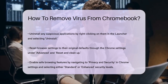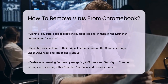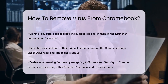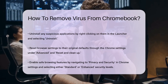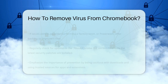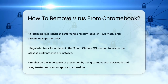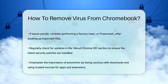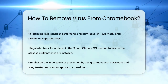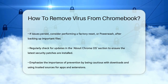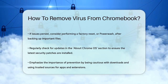If all else fails, you might need to perform a factory reset, also known as a power wash. This will erase all your apps, extensions, and data, so make sure to back up any important files to Google Drive or an external drive first. To do this, click the time in the bottom right of your screen, go to Settings, scroll down to Advanced, and select Power Wash. Follow the on-screen instructions to complete the reset.